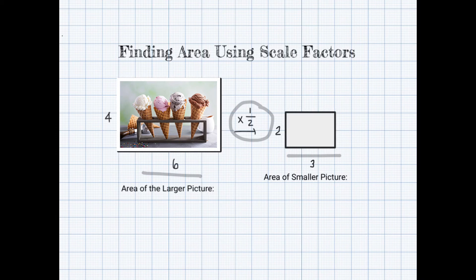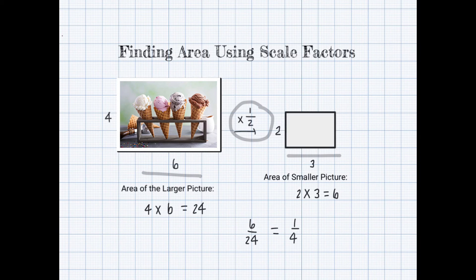Now if I find the area of the smaller picture, that is 2 times 3, which equals 6. For the larger picture, 4 times 6 equals 24. Dividing the area of the smaller picture by the area of the larger picture, we find the smaller picture's area is one-fourth of the larger picture's area. Where does this one-fourth come from? Looking back at the scale factor, one-fourth is one-half times one-half. That means you need to multiply the area of one figure by the scale factor squared to find the area of the other figure.